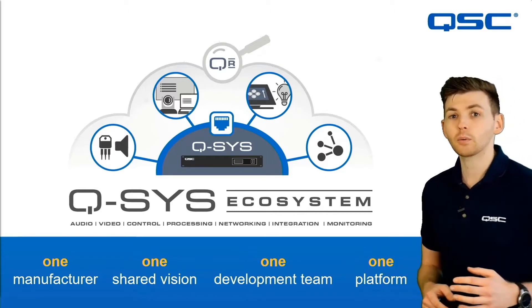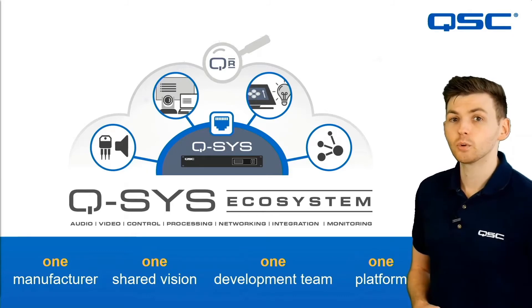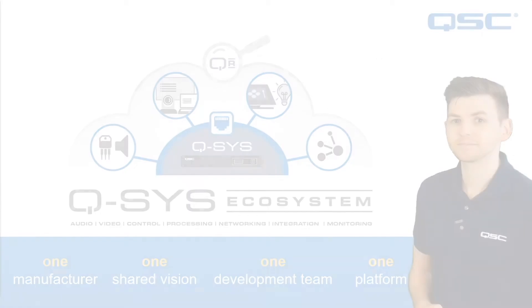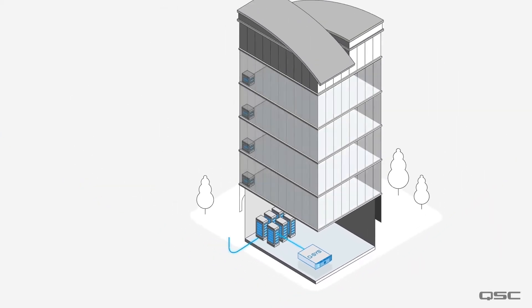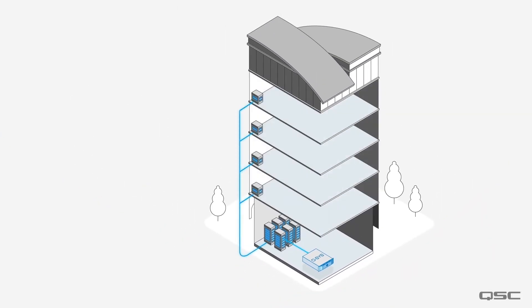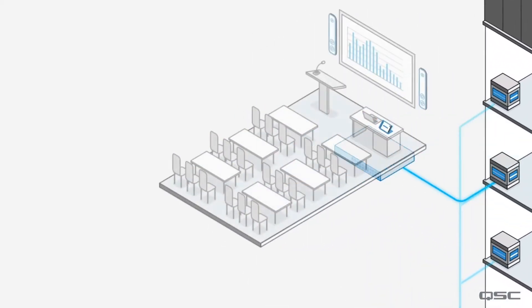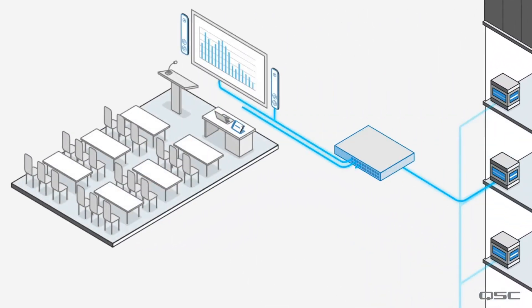Now let's take a look at how we can build a system in a little bit more detail. First we need a Q-SYS core. It's not a traditional AV device but a server that is built on IT standard technologies and operates over a standard network to monitor and manage all audio, video and control. Then in each room you can use native Q-SYS peripherals to build the AV system for that space.